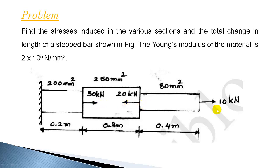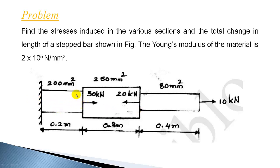Three forces are acting. At the end we have a 10 kilo Newton force. Here there is a 20 kilo Newton at this junction applied towards the fixed end, and again we have another force 30 kilo Newton acting towards right. There will be an opposing reaction force at the fixed end. In this particular example it is not required to calculate the reaction force — you can easily calculate it by summing up the forces and equating to zero.